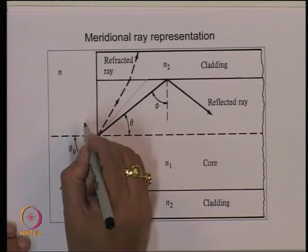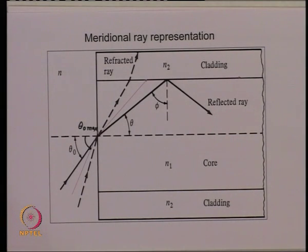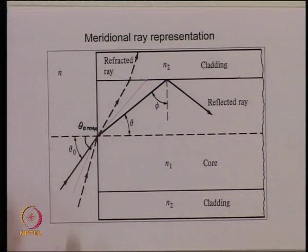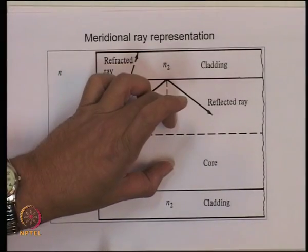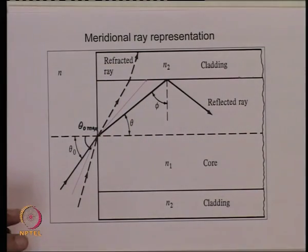For a given light source capable of sending light in all directions, the fiber selectively accepts only light coming from a certain cone — the cone corresponding to 2θ0_max. This means there is a light launching efficiency associated with the optical fiber. Only light within this cone will propagate in the core over long distances due to total internal reflection.